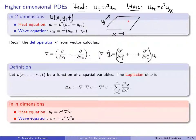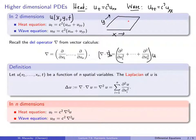Here's a definition. Let u be a function of n spatial variables — think of it as temperature at time t, or possibly displacement. The Laplacian of u, which I'll denote del squared of u, is the sum of the second spatial derivatives. Some books write it as this triangle symbol applied to u, which is shorthand for del squared. I'll usually stick with this notation.